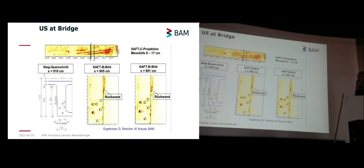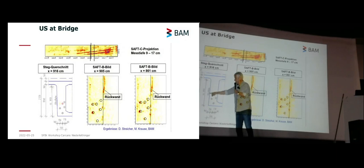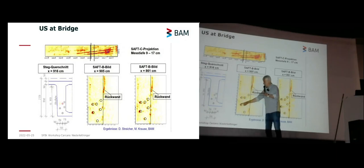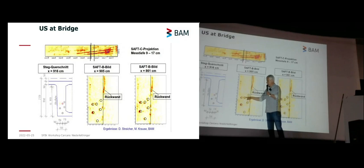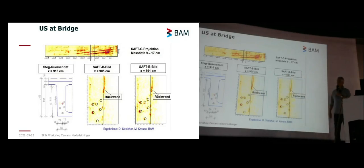When working on actual bridges, your results might look like this. The position of tendon ducts is very important for bridge assessment — they might not be in the place where they were designed to be. This is part of a bridge: the bridge deck where cars go is up here, and there is a big box below to support the structure with tendon ducts inside. Measurements were done from the outside, and we see most of the tendon ducts — not all of them, and sometimes not very clearly. With one reflection here it might be doubtful whether it's actually a reflection from a tendon duct or a multiple reflection. We also don't see the back wall everywhere, so it gives a lot of information but it's not perfect.